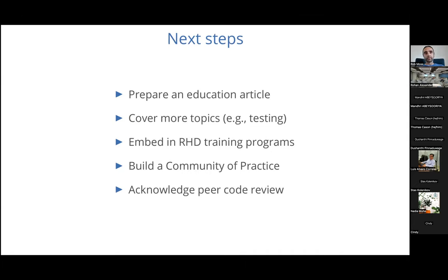We've prepared the materials and evaluated them, and we're writing up an education article to report on what went well and what we could do better. We still haven't got to topics such as testing, especially testing complex stochastic or agent-based models, which is always challenging. We're in preliminary discussions about embedding these materials in different research and higher degree training programs. We're also looking to build a community of practice — a forum to come together on a monthly basis for people to bring in questions, problems, or examples of things that have worked well. And once peer code review is happening consistently across our group, we want people to acknowledge it in their papers, just like you would for feedback on writing.